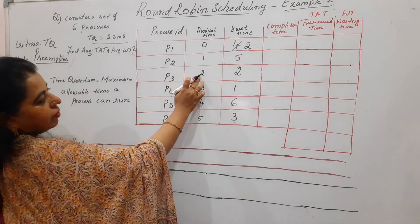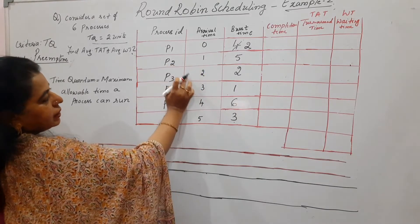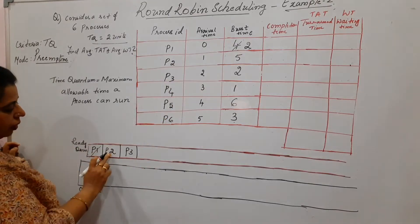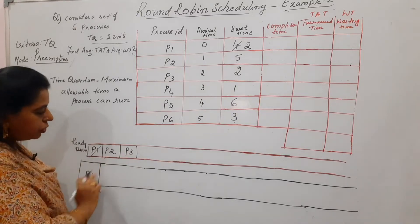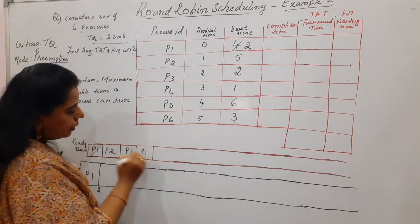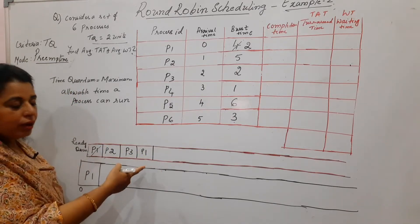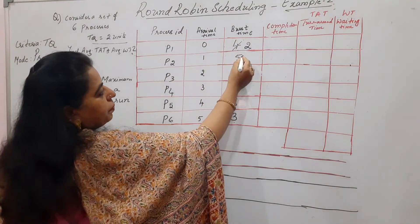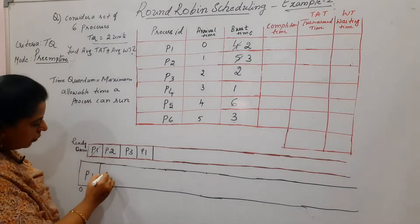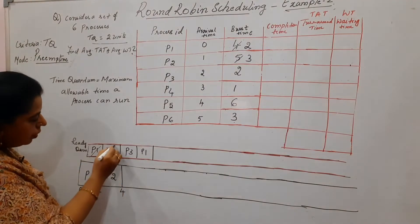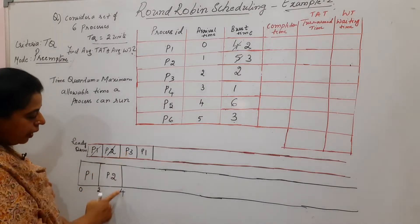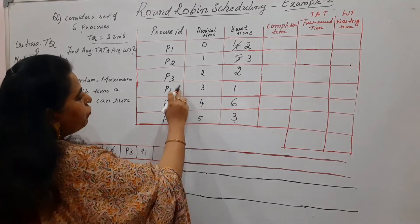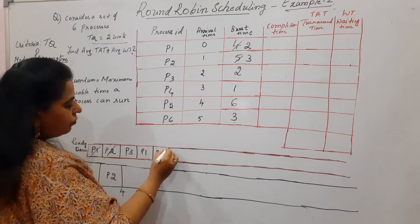At time unit two, check which processes are available. P2 and P3 arrived at time unit one, so both are placed immediately in the ready queue. P1 still has a remaining burst time, so it will get its turn after P2 and P3. P2's burst time is five, but with a time quantum of two, it runs for two units and stops at time four, leaving a remaining burst time of three.